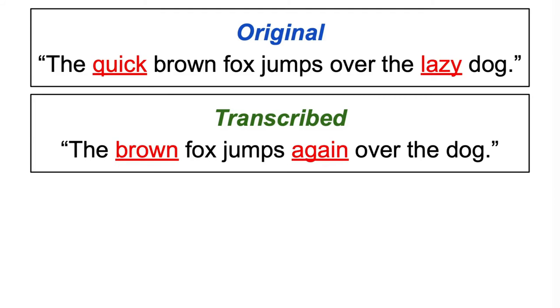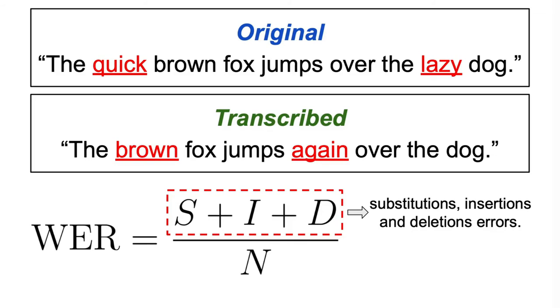So going back to our example, the word error rate is calculated by dividing the total number of errors by the total number of words in the original text. And in our case, the original sentence has 9 words and we have 3 errors.